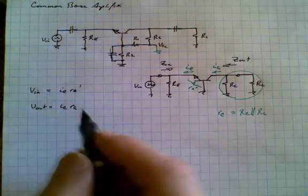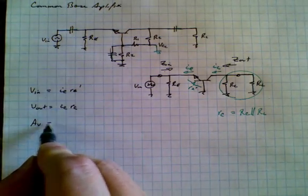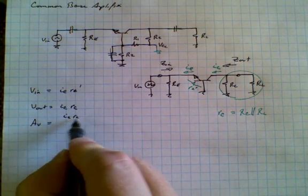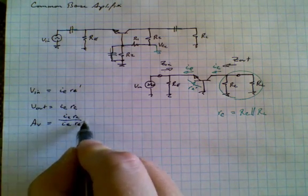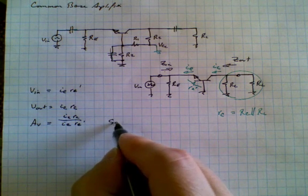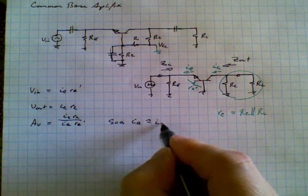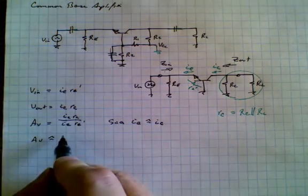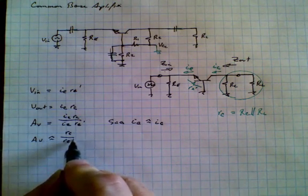And so knowing voltage in, voltage out, we can find the voltage gain is equal to Vout IC rc divided by IE RE prime. At this point, we note that since IE is approximately equal to IC, we can rewrite the voltage gain as approximately equal to rc divided by RE prime.